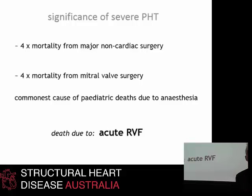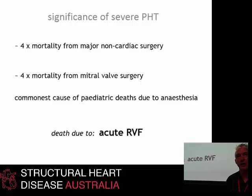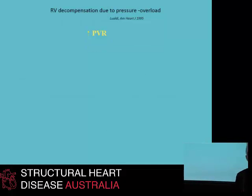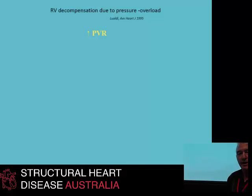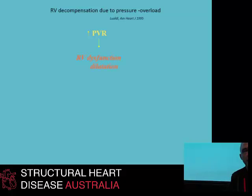The majority of patients with pulmonary hypertension die because of acute right heart failure. You really need to understand exactly how the right heart fails in response to an elevated pulmonary vascular resistance or an increase in its afterload — this is very elegantly described in a paper from 1995. As the right ventricle encounters an increase in afterload, two things happen: it becomes dysfunctional and it dilates.